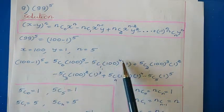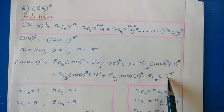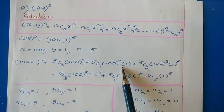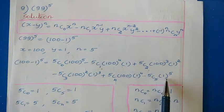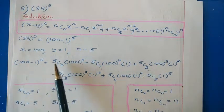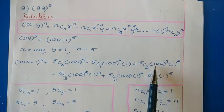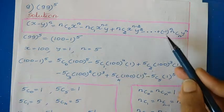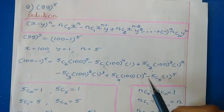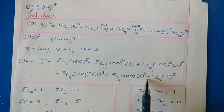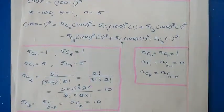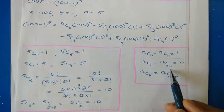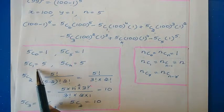Writing the expansion of 100 minus 1 to the power 5: we start from 5c0 up to 5c5. The first variable 100 has decreasing powers from 5 to 0, and the second variable 1 has increasing powers from 0 to 5. Since we have a negative sign, the signs alternate: plus, minus, plus, minus, plus, minus. With power 5 being odd, the last term is negative.